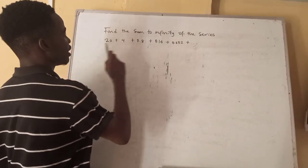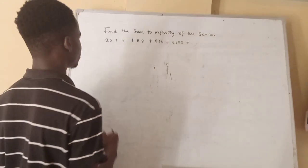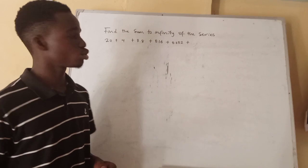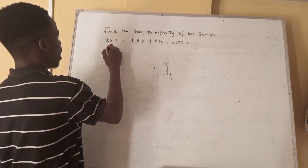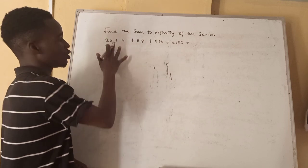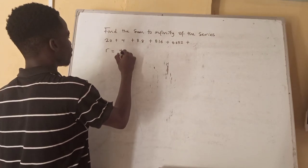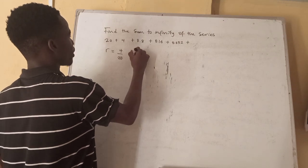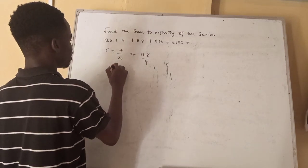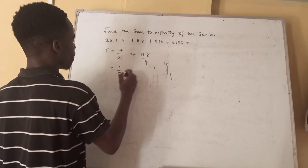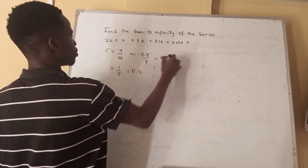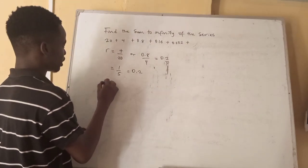In this next question we are asked to find the sum to infinity of the series 20, 4, 0.8, 0.16, 0.032. The first thing we look for is the common ratio R, which is the ratio of two consecutive terms. We can say 4 over 20, which gives us 1 over 5, which is 0.2. The formula for sum to infinity is A over 1 minus R.